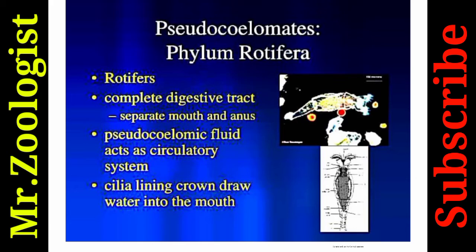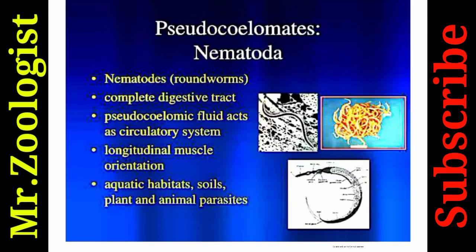Phylum Rotifera have a complete digestive tract with a separate mouth and separate anus; cytoplasmic fluid acts as the circulatory system, and cilia lining a crown draw water into the mouth. Nematoda — roundworms — also have a complete digestive tract, cytoplasmic fluid as circulatory system, longitudinal muscle orientation, and inhabit aquatic habitats, soils, plants, and act as animal parasites.